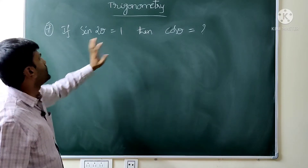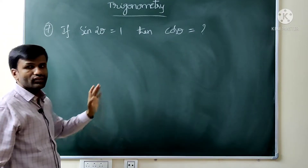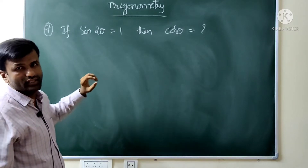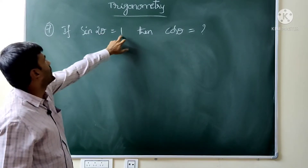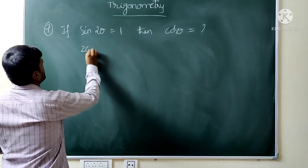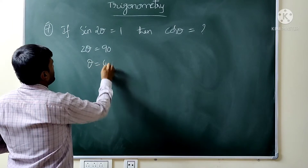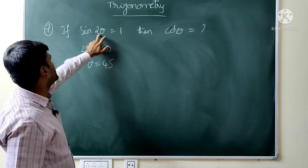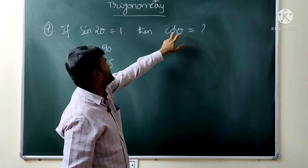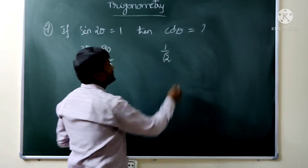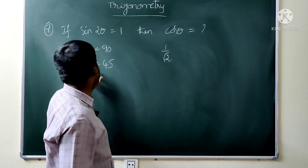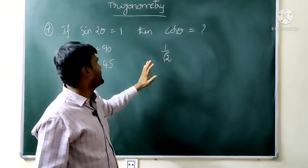Seventh question: if sin 2θ equals 1, then cos θ equals what? Sin 2θ = 1 means sin 90. So sin cancels and 2θ = 90, therefore θ = 45. Applying: cos 45 = 1 by √2. This is the method — find θ value first and apply directly. Very easy question.